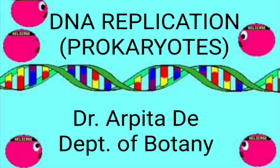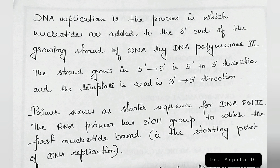DNA replication in prokaryotes is the process in which nucleotides are added to the 3' end of the growing strand of DNA by DNA polymerase 3. The strand grows in the 5' to 3' direction, and the template is read in the 3' to 5' direction. A primer serves as a starter sequence for DNA polymerase 3. The RNA primer has a 3' OH group to which the first nucleotide is bound — that is the starting point of DNA replication.